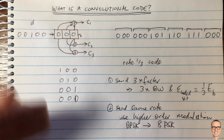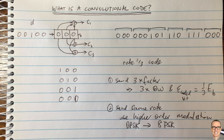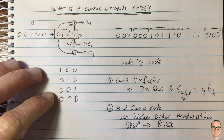The convolutional code has these nice structural properties that also lead to an efficient way of decoding, which we'll cover in another video. Don't forget to like this video if you found it helpful — it helps others find it — and subscribe to the channel for more videos.